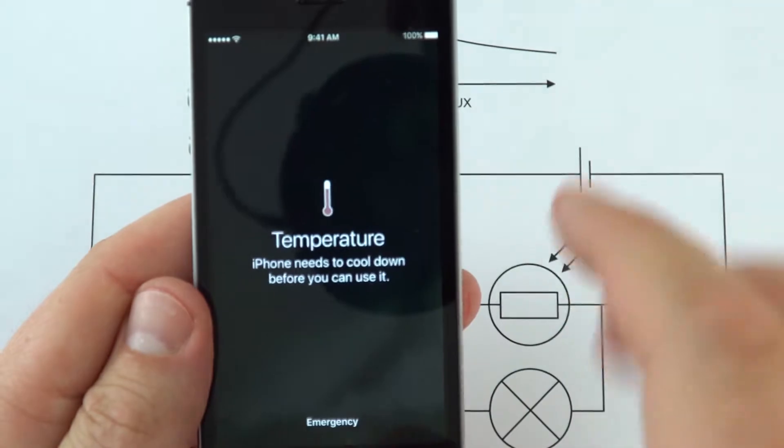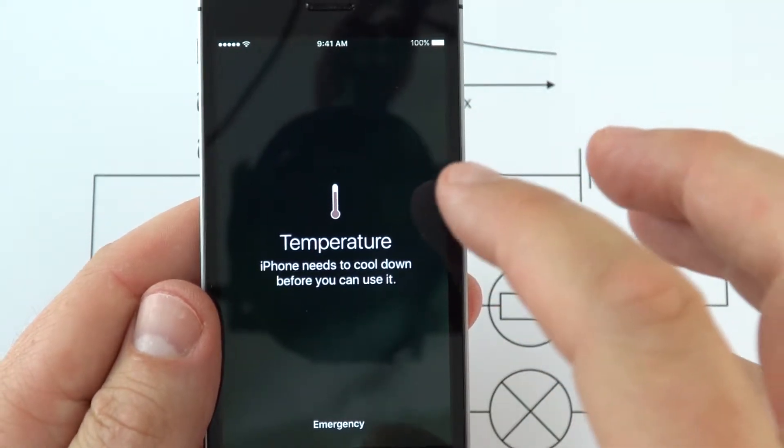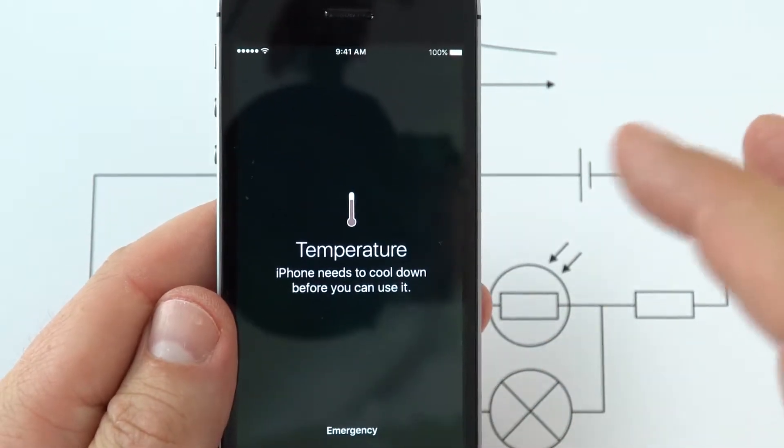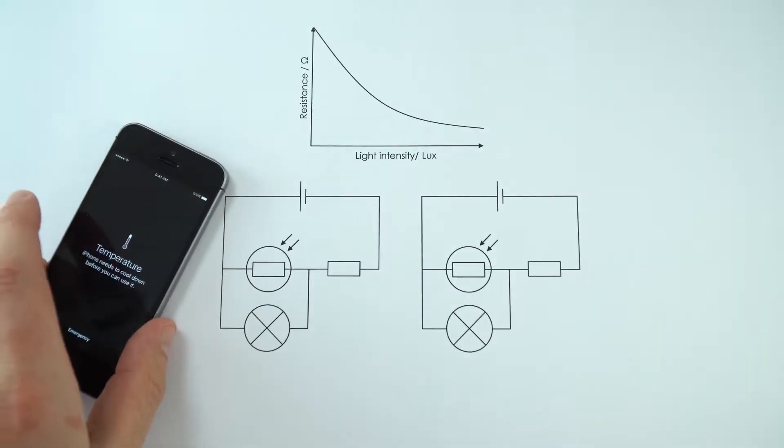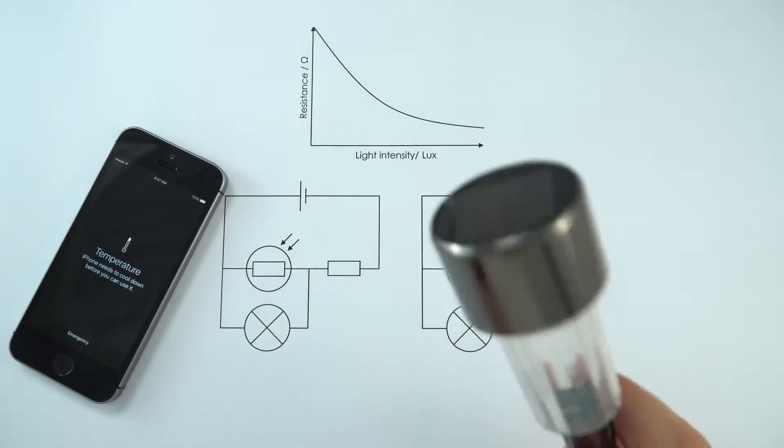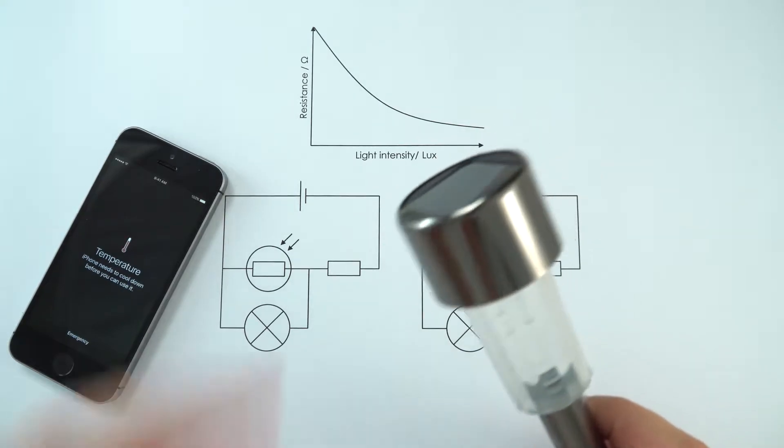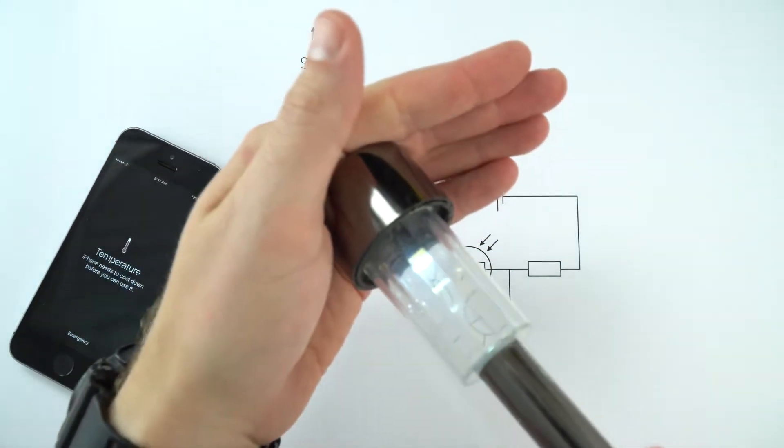Occasionally when you use your phone too much or it's a really hot day, you get this warning that says it's too hot and then your phone shuts down to stop any damage happening. But how does your phone know how hot it is? Or indeed, if you've got maybe a solar-powered LED light outside, how does it know it's nighttime and therefore needs to light up?